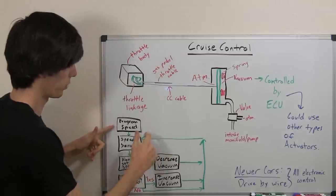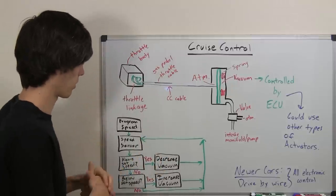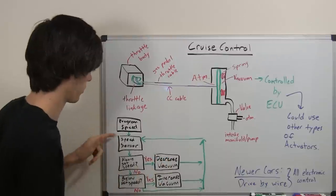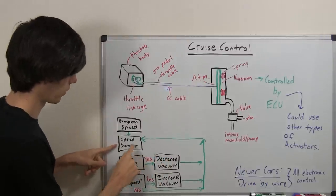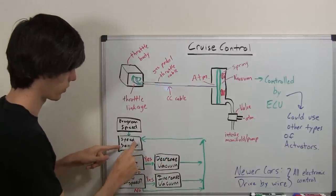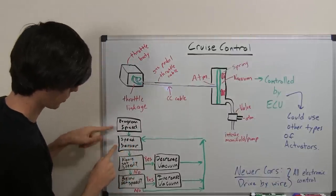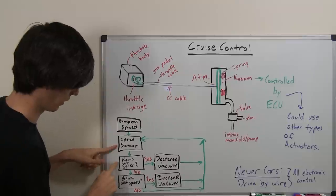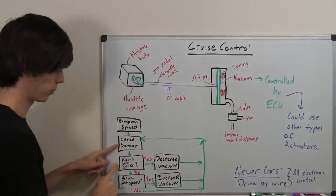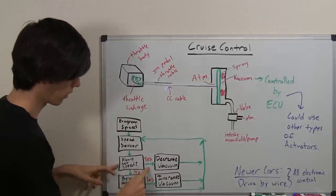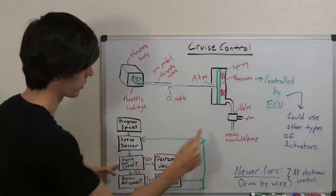So the user is going to set a speed. You're just going to push a button, probably on your steering wheel, to set a speed, and then you're going to have a speed sensor. That speed sensor is going to be reading the speed of your car. So then that speed sensor is going to compare with your programmed speed and say are we above the set speed. If you are above the set speed, then you'll decrease the vacuum in here.